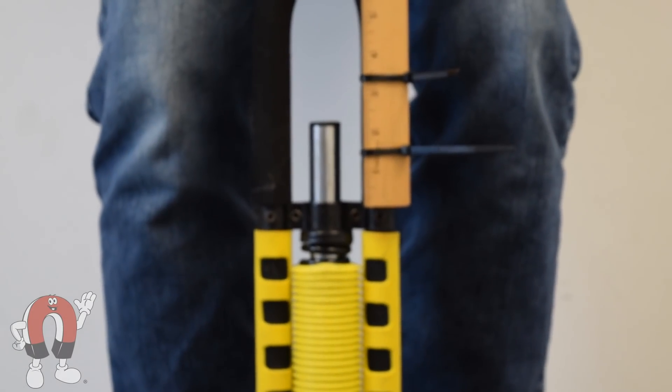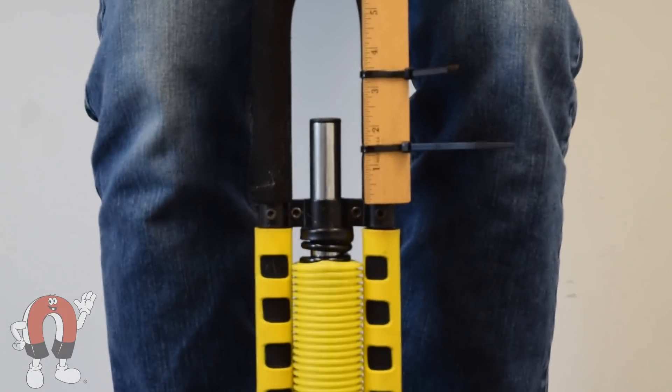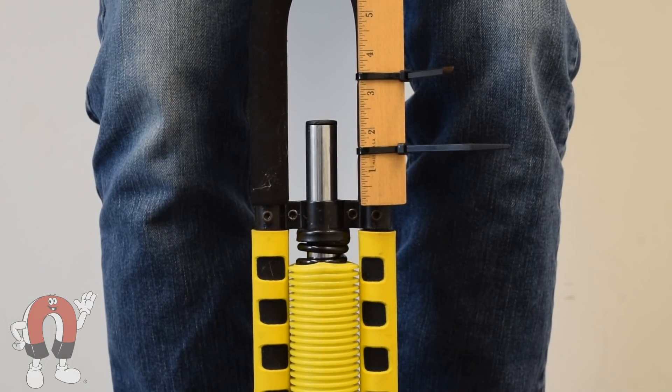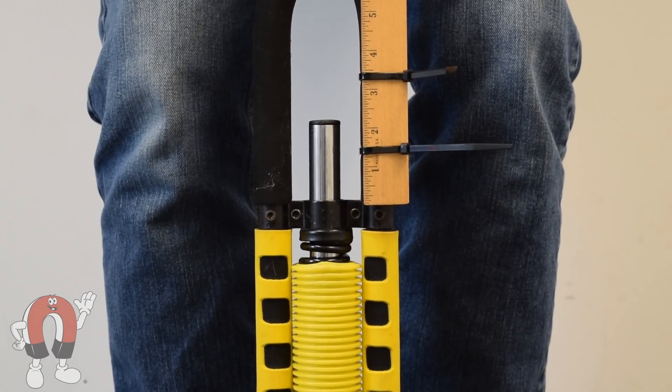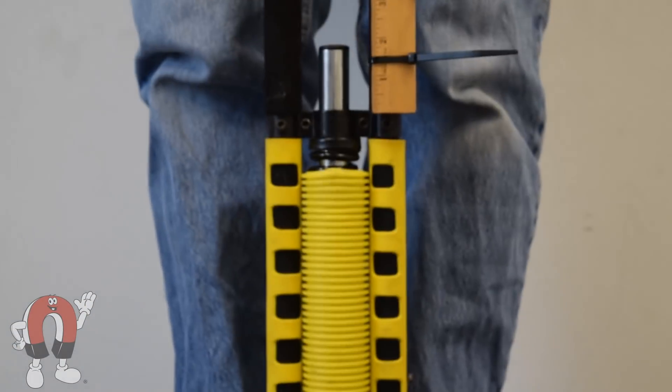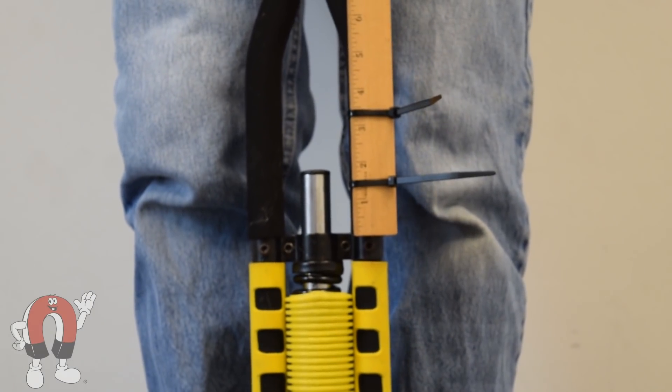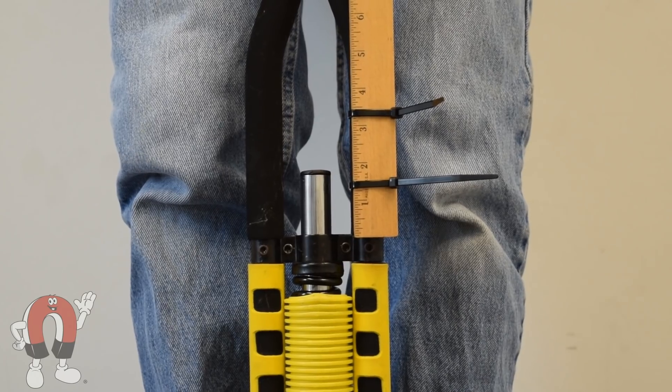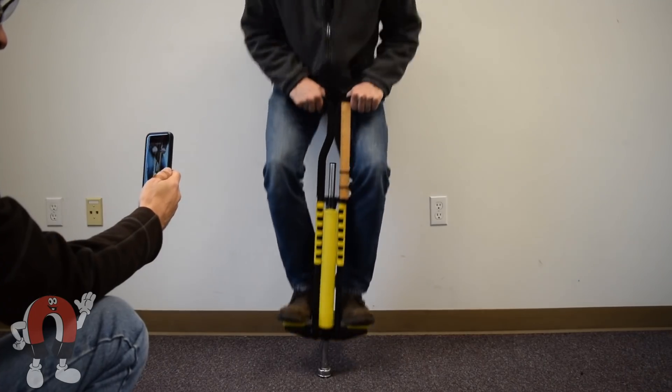We start out with this coil spring pogo stick and take a measurement of how far it compresses when a 175 pound person stands on it. Then we do the same thing with a lighter guy. It compresses a little less when a 150 pound person stands on it. Using that information we should be able to figure something out about how much force this spring provides.